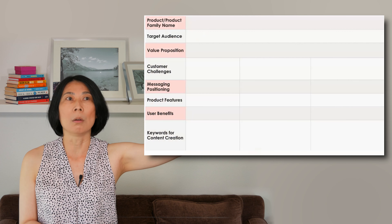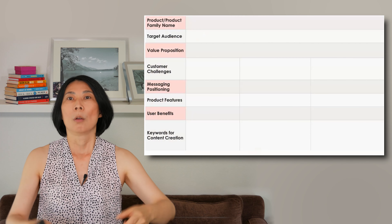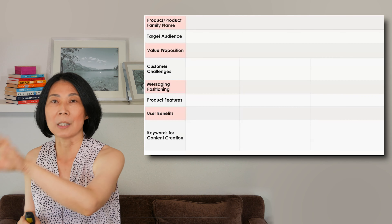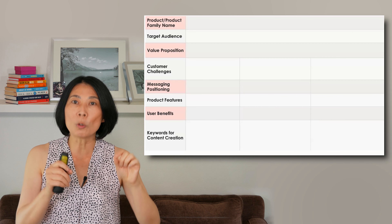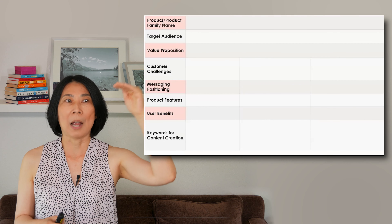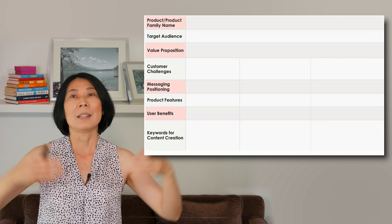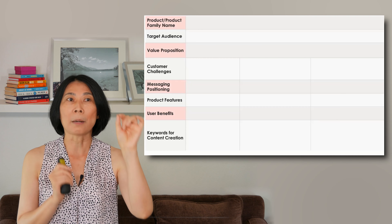The second row is the target audience — who do you want to market to? What is the specific value proposition for that product? With that value proposition, what customer challenges do you want to address? And also the messaging positioning and the product features associated with each challenge. I would say identify three major customer challenges and how your products address them. Then you have messaging positioning, product features, and next — can you translate those product features to user benefits?